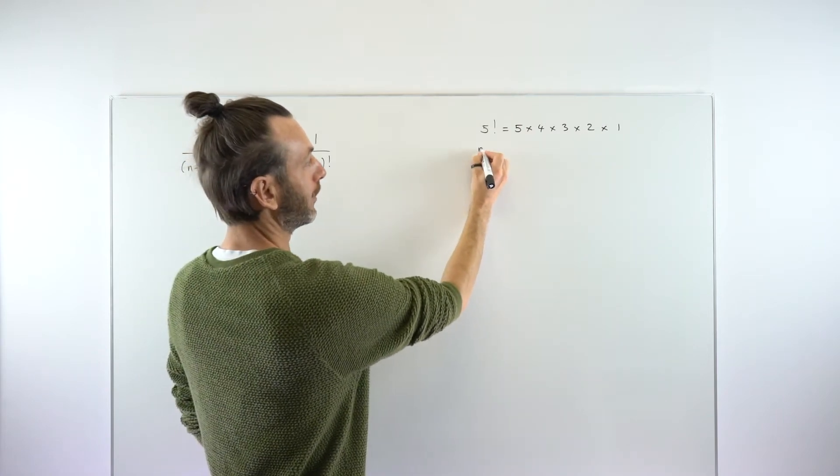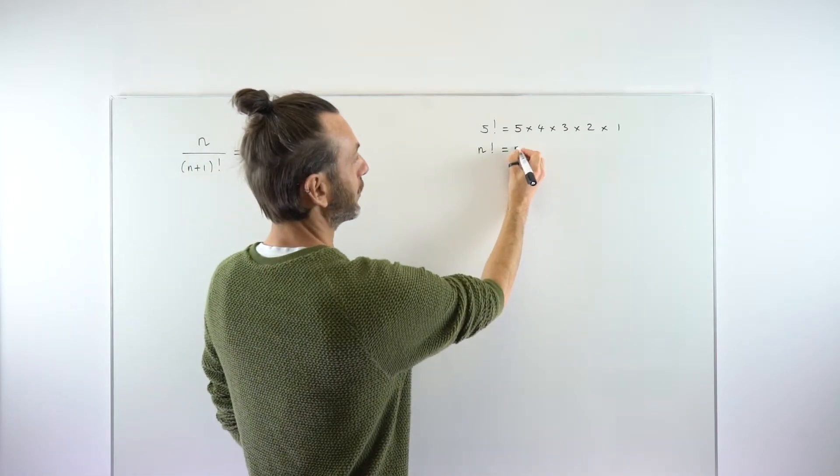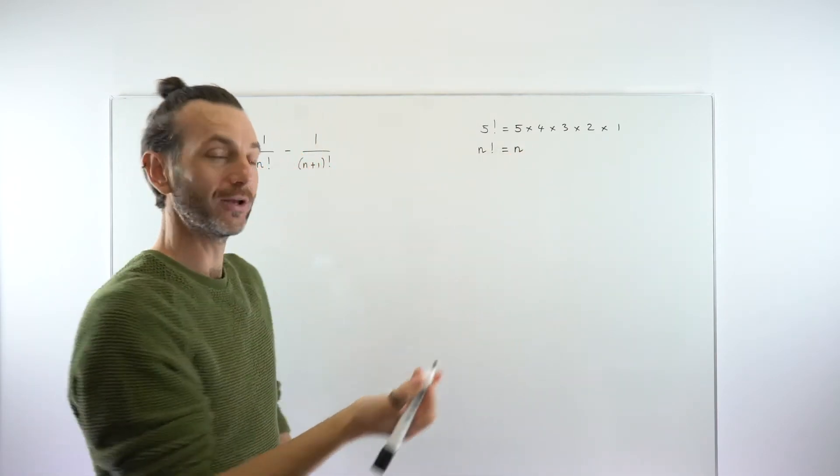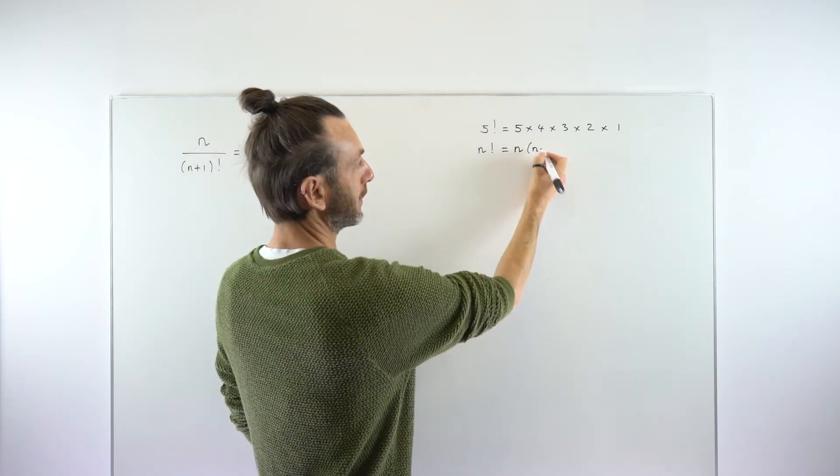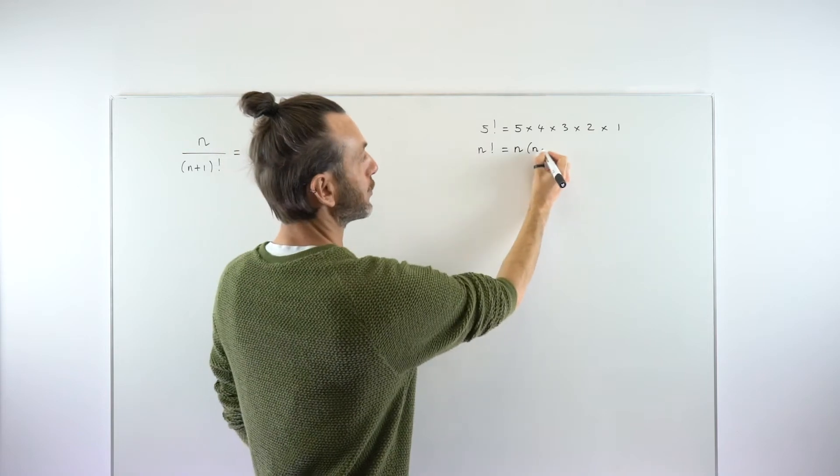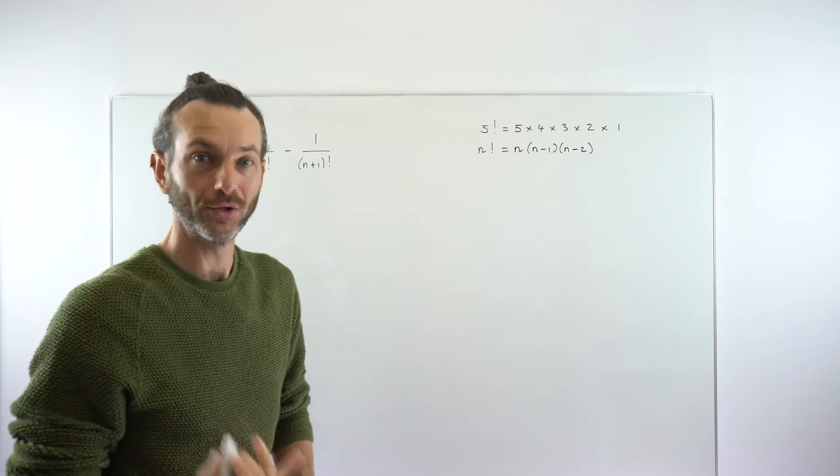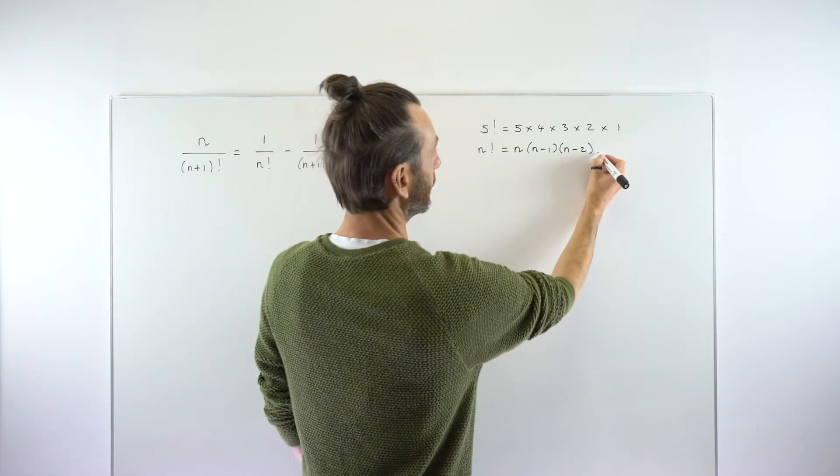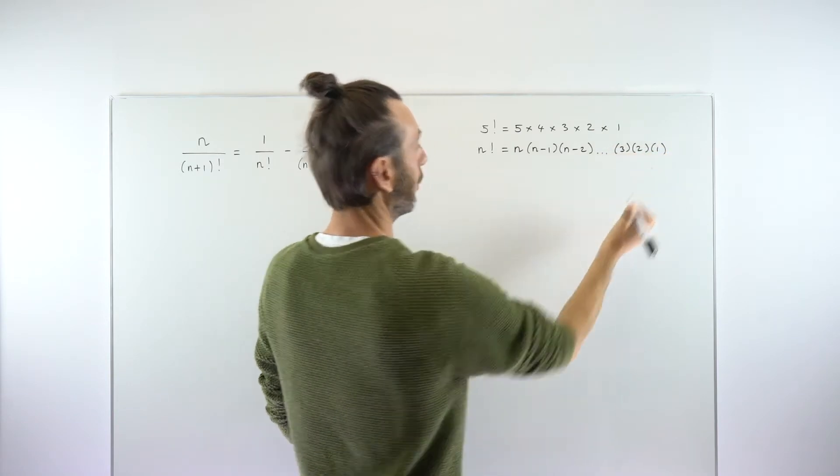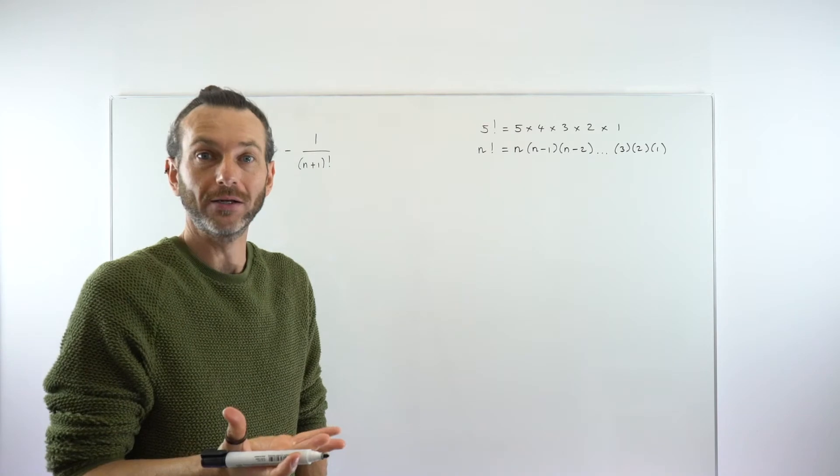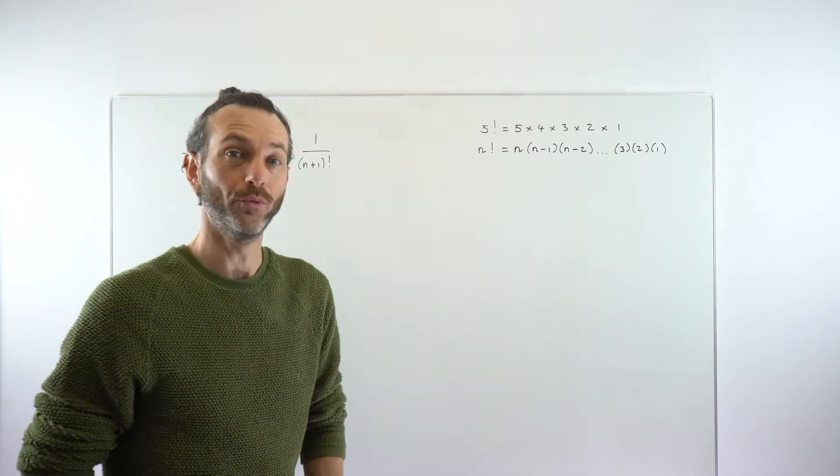But in general, if you've got n factorial, the same principle applies—it's just multiplying n to all the numbers below n. Now n could be any number, so we're just dealing in general terms. So it will be n times the number 1 smaller than n, which is n minus 1, times the number 1 smaller than that, which is n minus 2, and that just carries on all the way down to 3 times 2 times 1, basically all the way until you get to 1. So that's just a reminder about how factorials work.